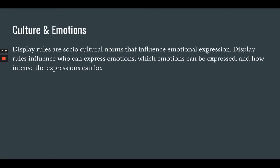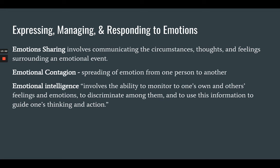Culture and emotion: display rules are sociocultural norms that influence emotional expression. They dictate who can express emotions, which emotions can be expressed, and how intense the emotions can be. Emotion sharing involves communicating the circumstances, thoughts, and feelings surrounding an emotional event. Contagion is spreading that emotion from one person to another — if someone is sad and crying, that affects us too. Emotional intelligence involves the ability to monitor one's own and others' feelings and emotions, discriminate among them, and use this information to guide one's thinking and action.